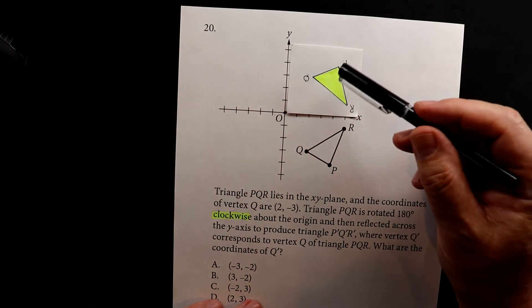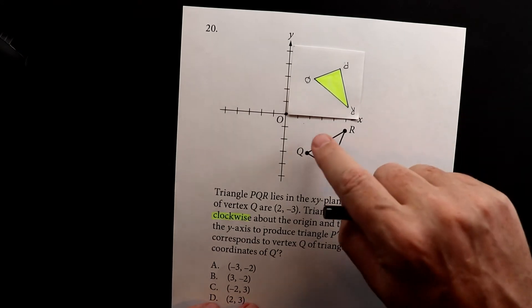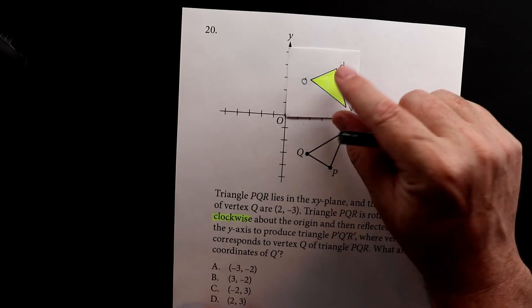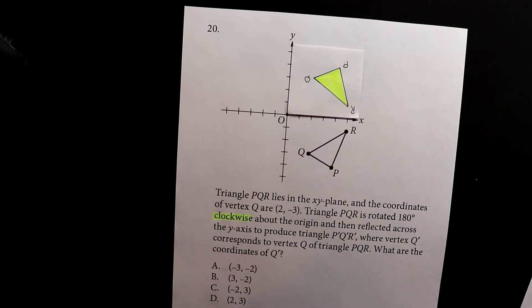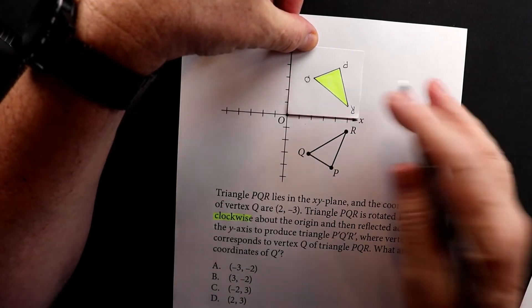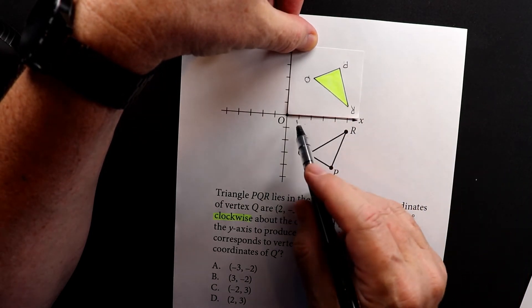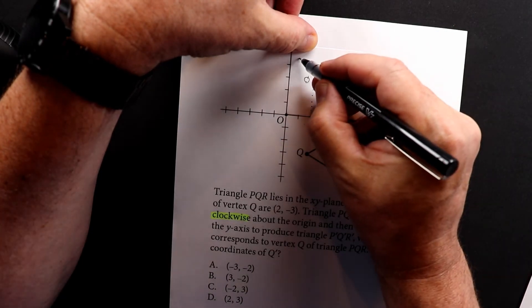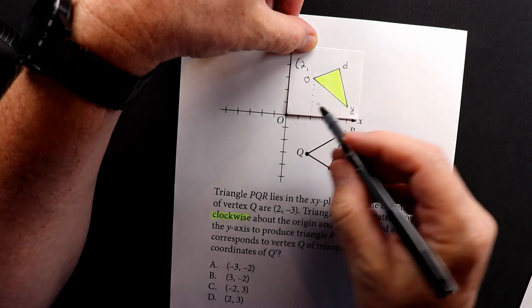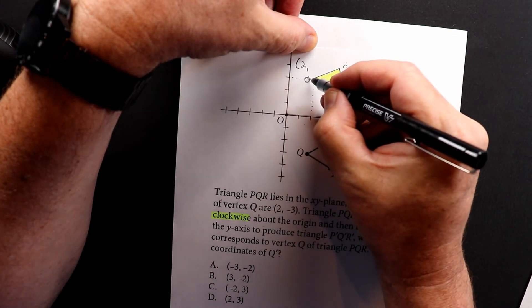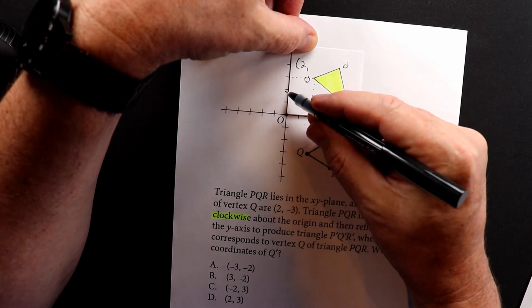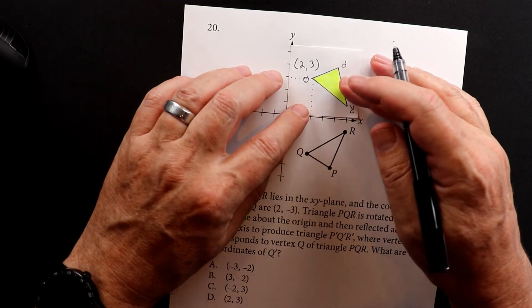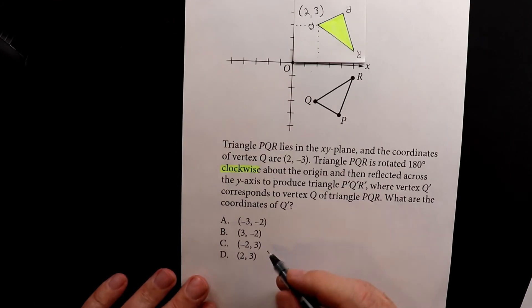So watch this. I take this and then I flip it over to there. And what I did is I just copied this triangle on both sides. So we rotate it 180 degrees and then we flipped it over. So now we have the Q coordinates are the X and the Y. So X is one, two. So we have X of positive two. And then the Y is one, two, three, positive three, which is letter D.